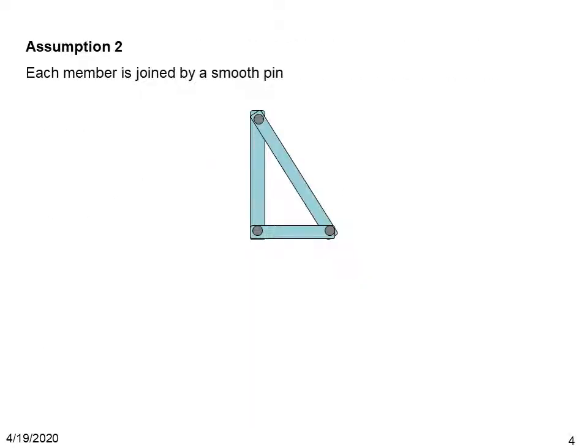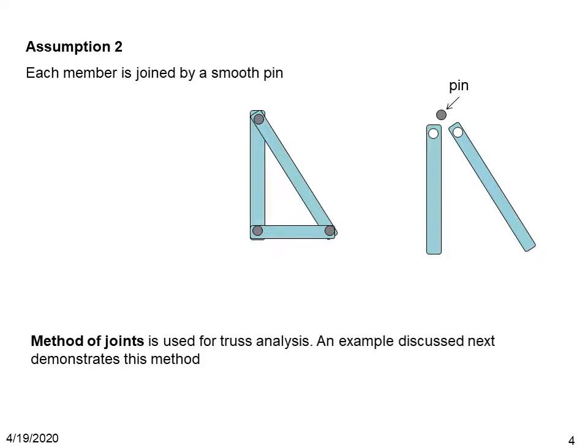The second assumption is that each member is joined by a smooth pin, so we neglect friction in the analysis. Although there are several methods for truss analysis, we are going to discuss the method of joints in this video to find out the various forces in the elements.